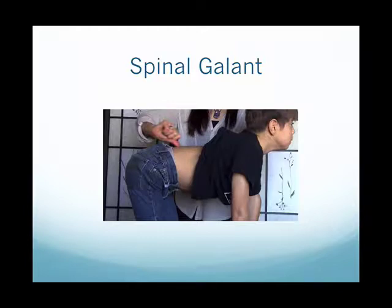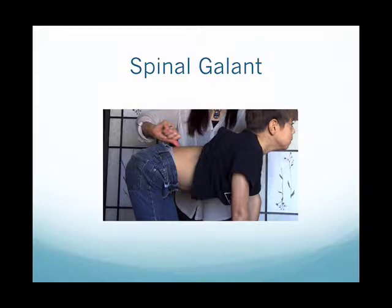To test the spinal gallant, have the child in the position you saw in the first video. Stroke downward along about an inch away from the spine on each side and watch for movement in the hips, or high sensitivity in that area. Older children may compensate and not show the hip flexion, so ask them what they felt — they might say it felt strange or weird. For adults who compensate well, we sometimes use muscle testing to determine whether the system registered the stimulus as unusual.